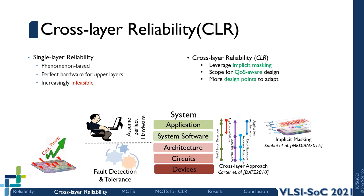In contrast, the cross-layer approach distributes the fault mitigation activities across multiple layers of the system stack. As a result, the implicit masking of multiple layers can be utilized. It also results in a more application-specific approach by utilizing different types of redundancies in the system. Such design decisions can be made to leverage the application's inherent robustness to degradation of certain types of reliability.